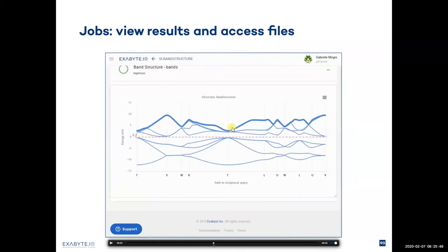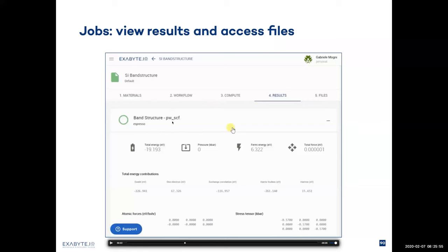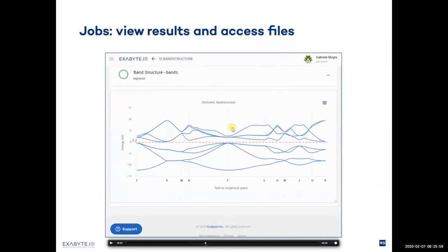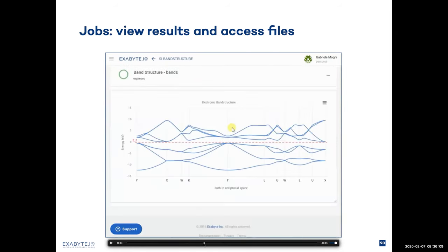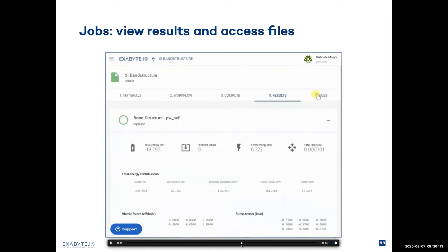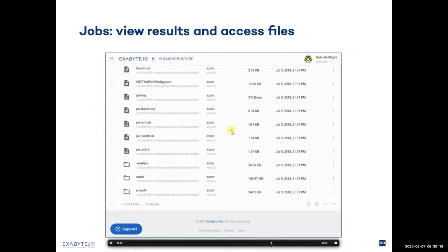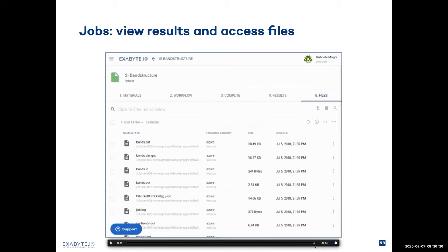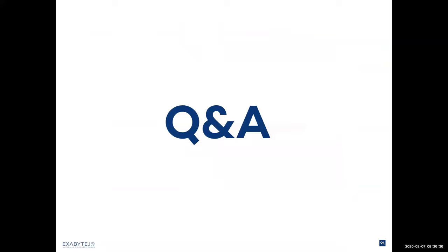Finally, when the job is finished, we can navigate into it. The calculation is finished and its status has turned green. We can open the job entry and see the results. This is a band structure calculation, which also extracted multiple other properties along the way — like total energy, pressure, Fermi energy, and such. At the bottom we see the result, the band structure itself. Please note that the results are shown per unit: the PWSCF unit extracted the energy-related results, and the final band structure unit extracted the band structure graph. This graph is interactive, so you can interact with it. The files tab contains all the files generated inside the calculation, and you can download them or visualize them on the web.